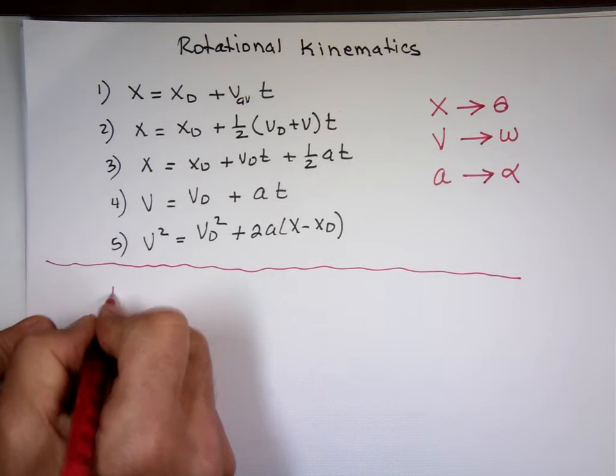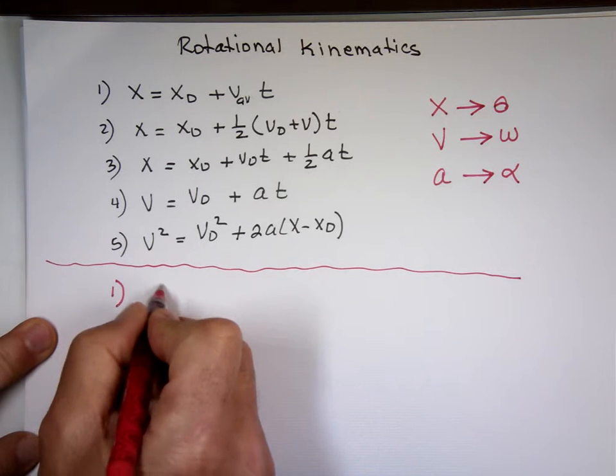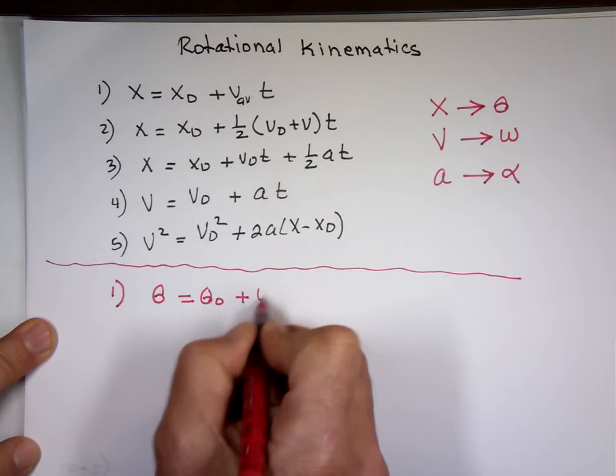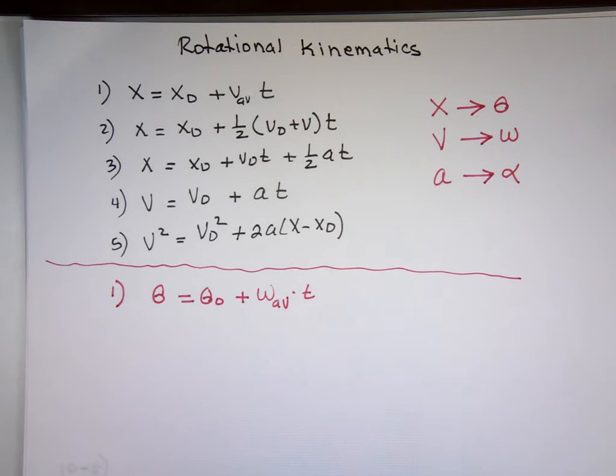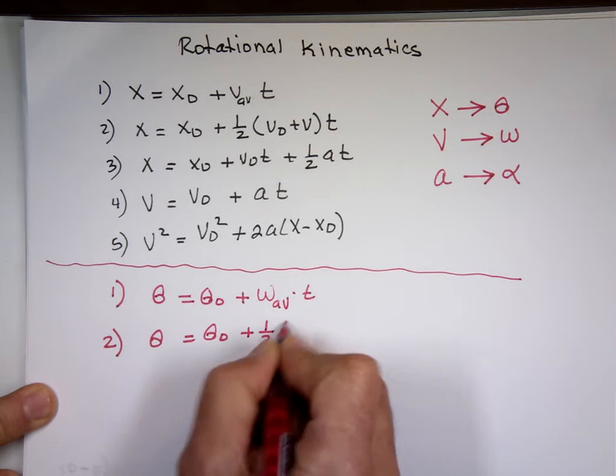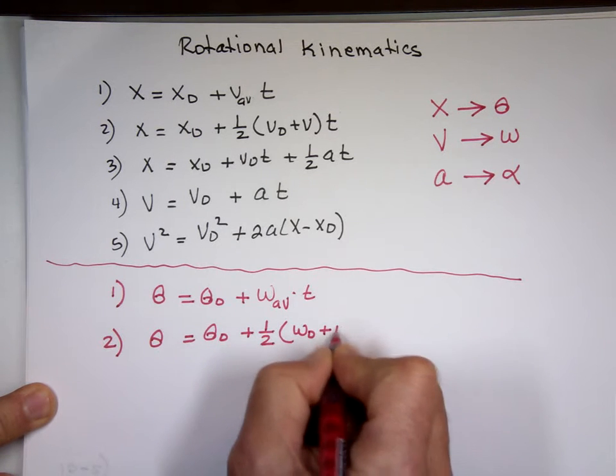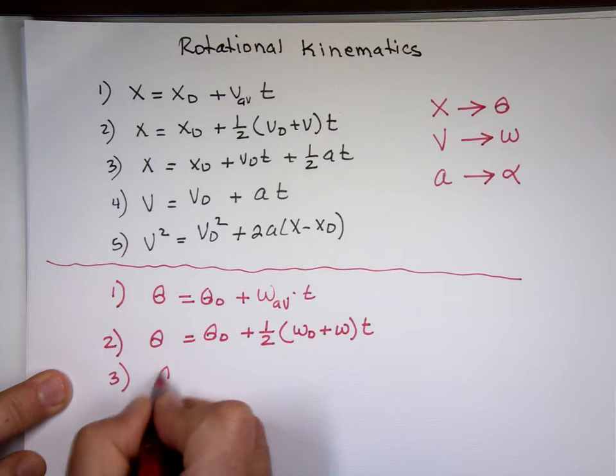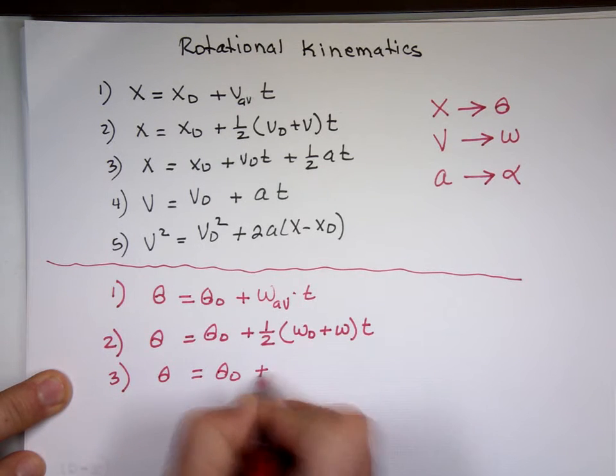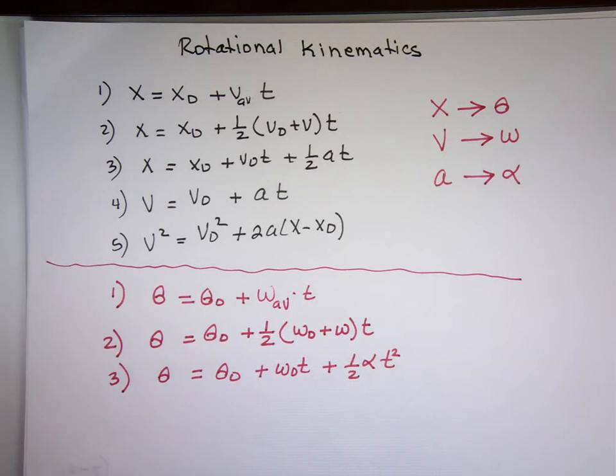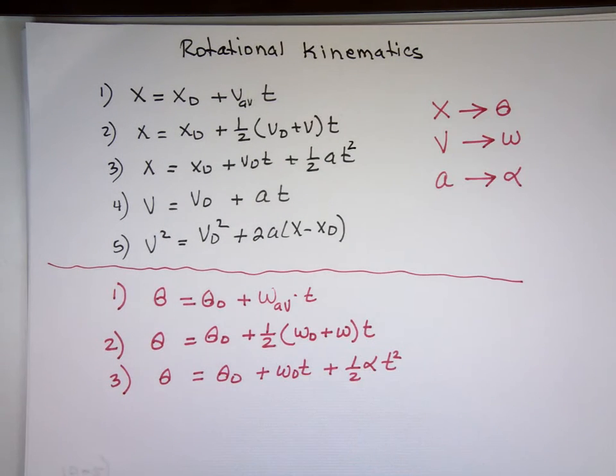I'm going to create five equations now. Here's the first one. Instead of x, I'm going to put theta in place of x 0, theta 0, plus in place of v, w average times t. Equation 2: theta equals theta 0 plus 1 half w 0 plus w times t. Equation 3: theta equals theta 0 plus w 0 t plus 1 half alpha t squared. I forgot the square here, make sure you put it there.